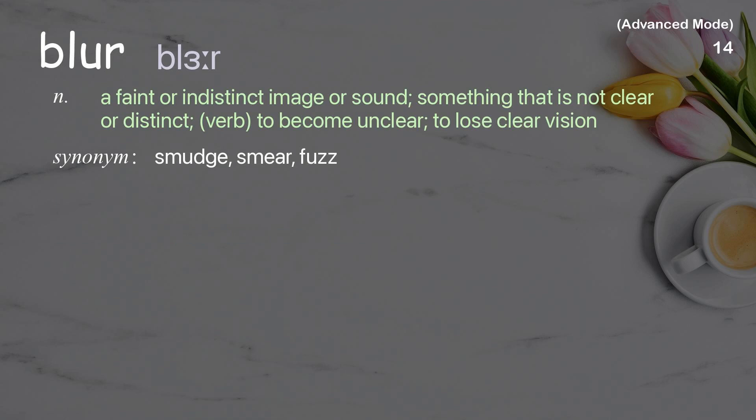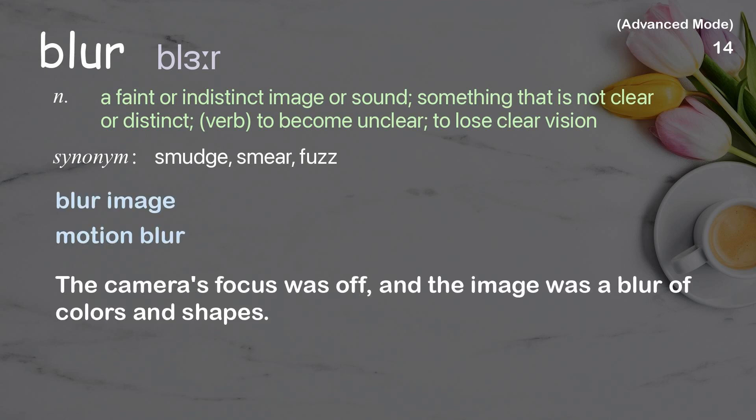Blur: a faint or indistinct image or sound; something that is not clear or distinct. As a verb, to become unclear or to lose clear vision. Examples: blur image, motion blur. The camera's focus was off and the image was a blur of colors and shapes.